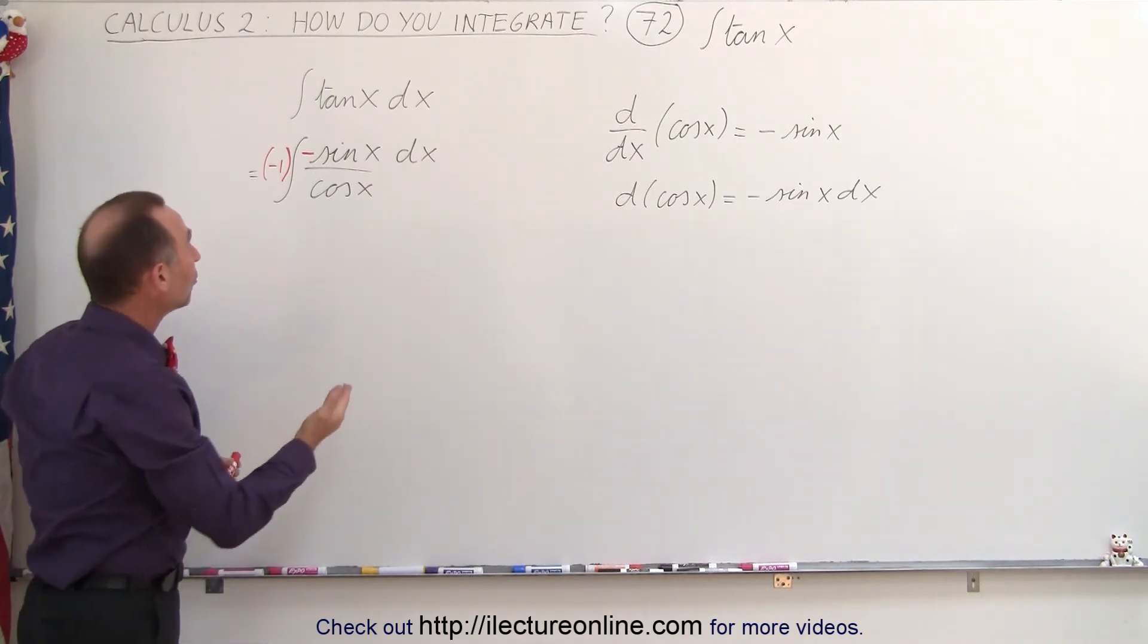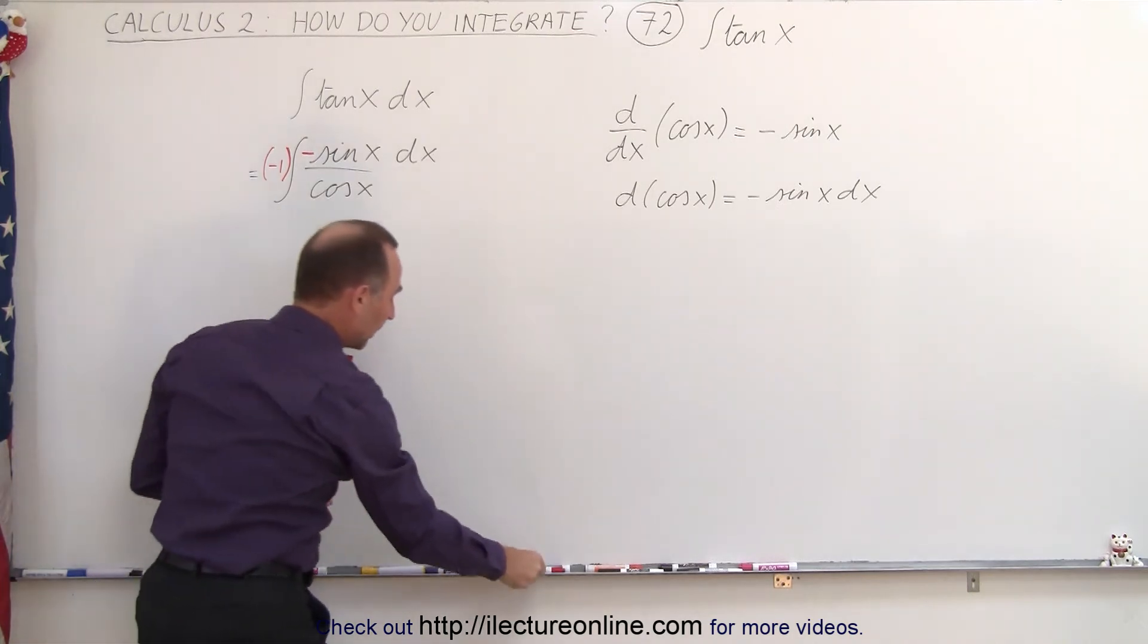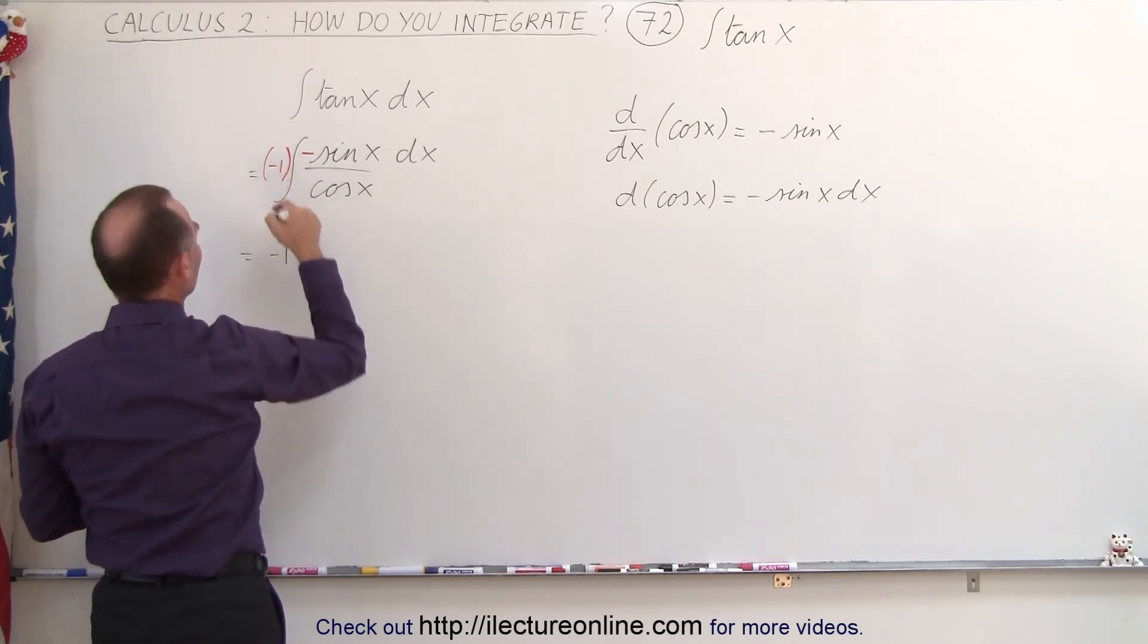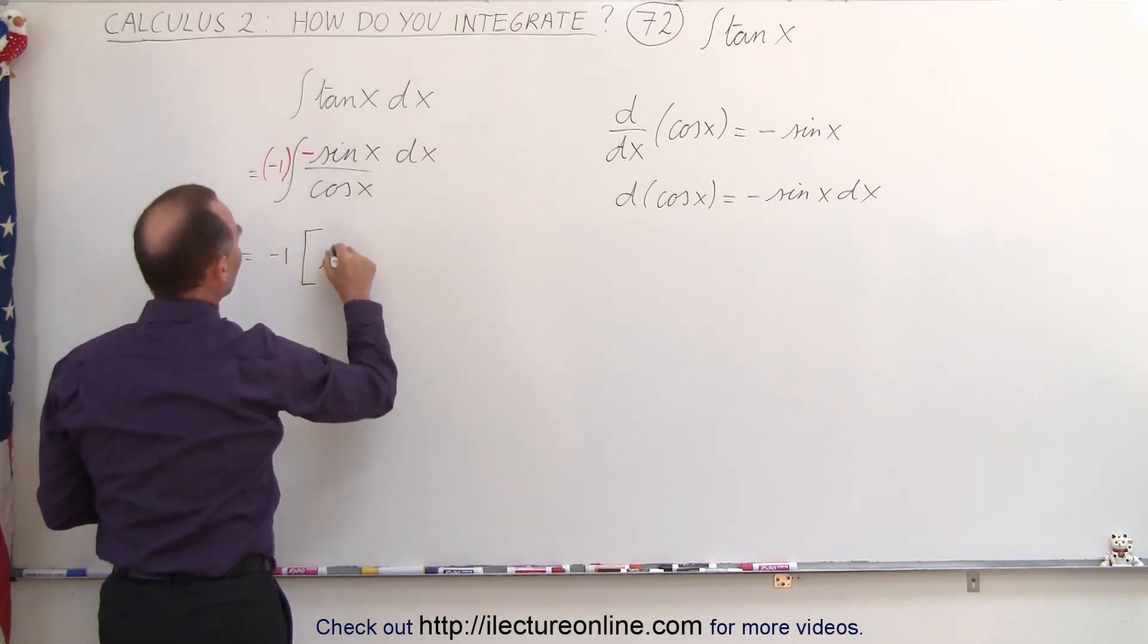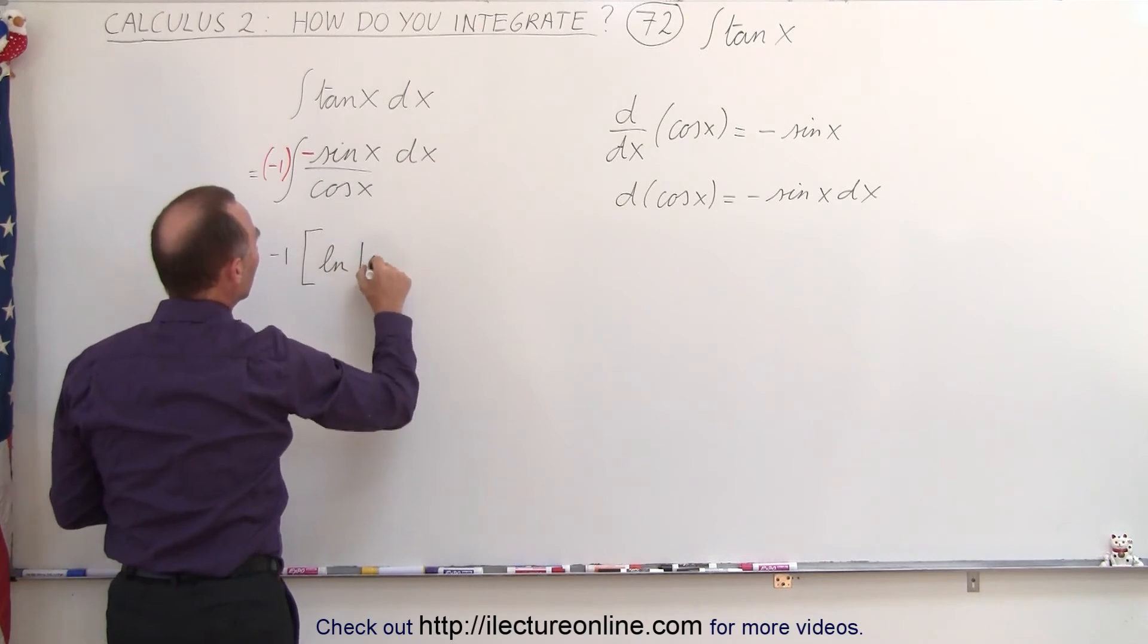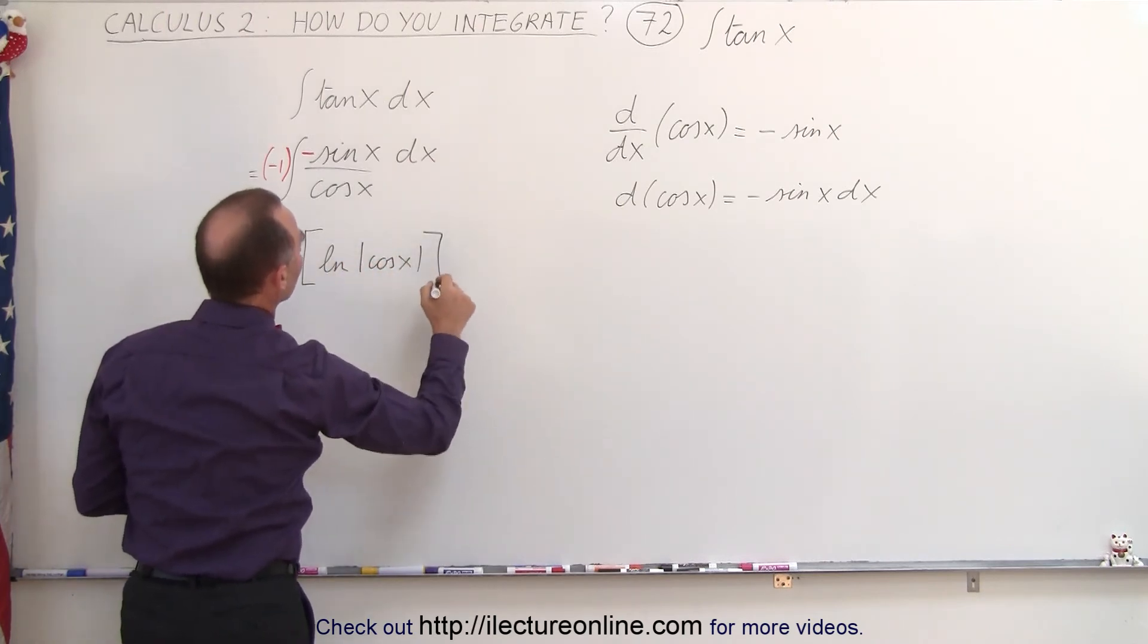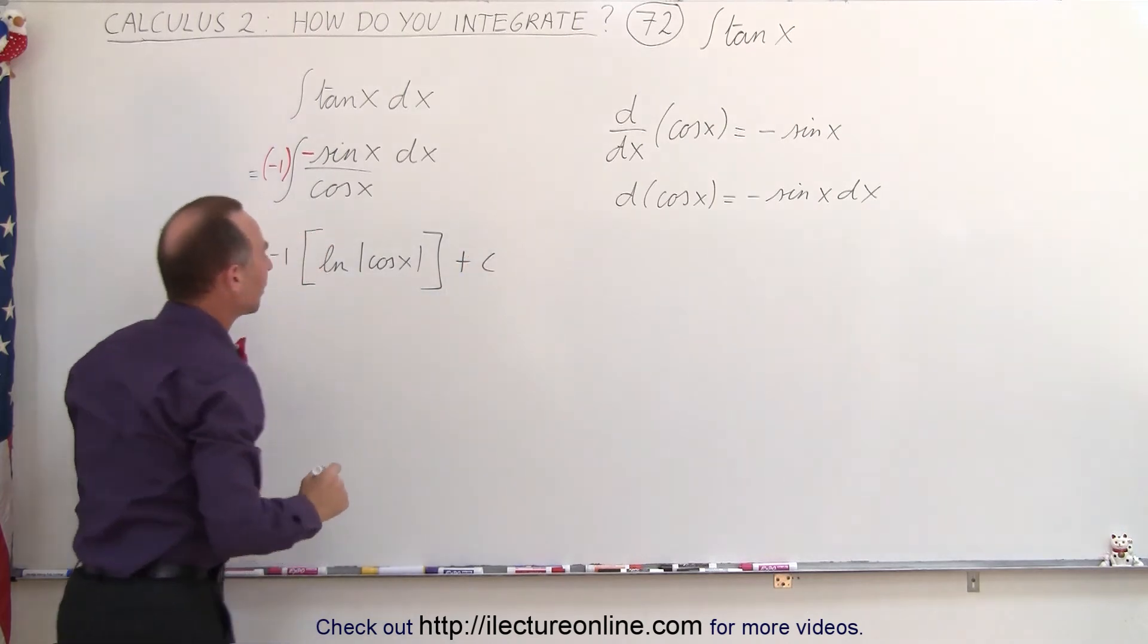we can integrate this by using the natural log. And so this then becomes equal to the negative 1 from over here times the natural log of the cosine of x plus a constant of integration.